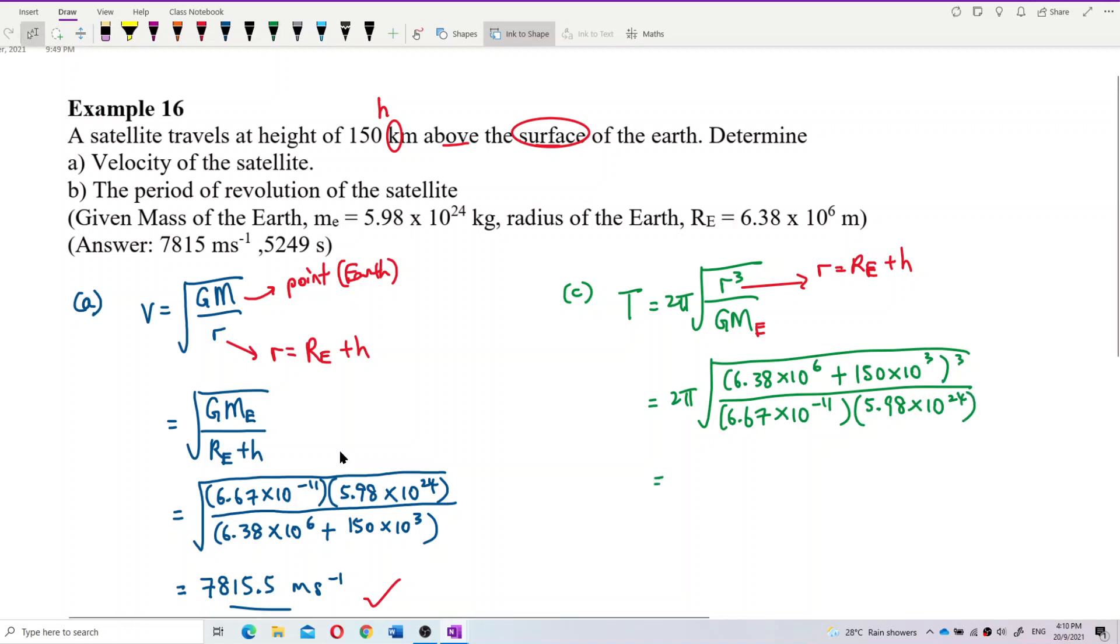Now it's our time to calculate the answer. I got the answer already. So it is 5249.72. Is that correct? Second, because period is a time. Period is a time, so the unit is second. So the answer is 5249.